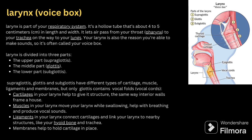Next comes the larynx. The larynx is a part of the respiratory system. It is a hollow tube, about four to five centimeters in length and width. It lets air pass from your throat, that is the pharynx, to your trachea on the way to your lungs. The larynx is also the reason you are able to make sound, so it is often called the voice box. The larynx can be divided into three parts: the upper part is called the supraglottis, the middle part is the glottis, and the lower part is the subglottis.